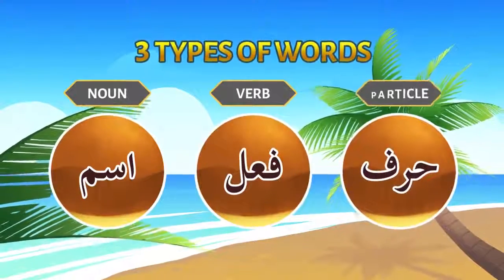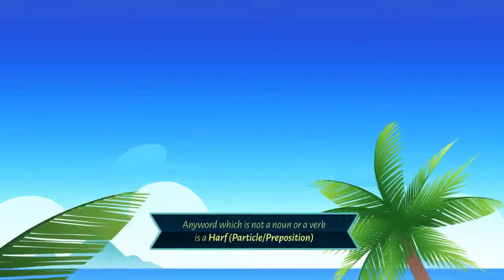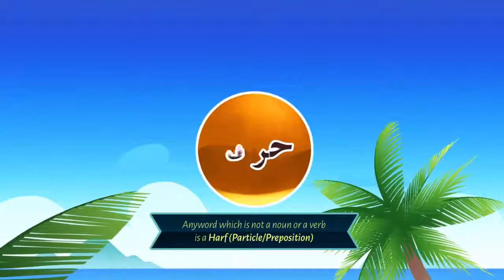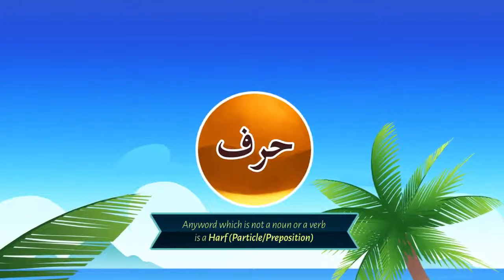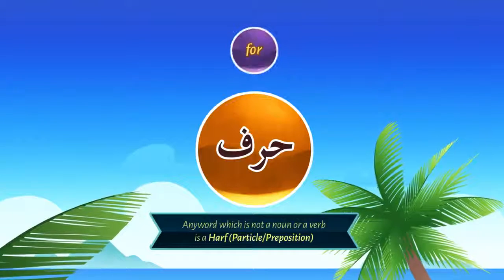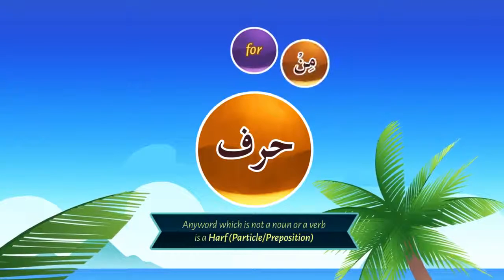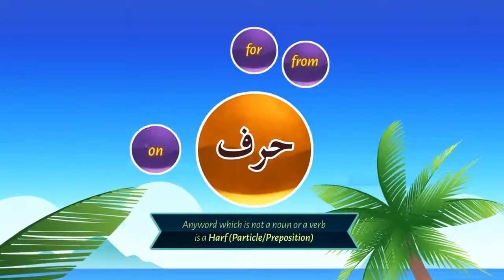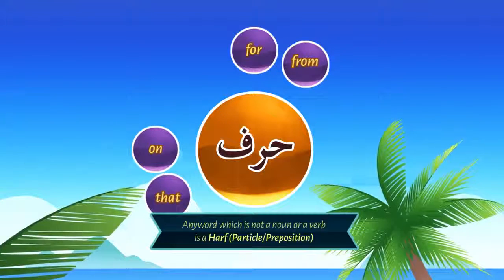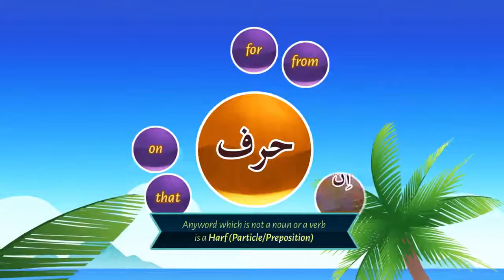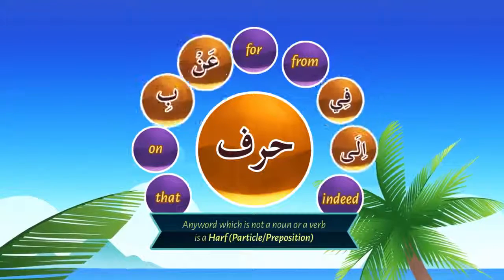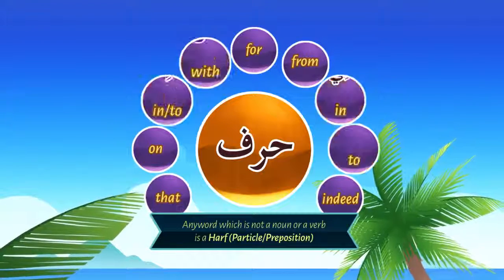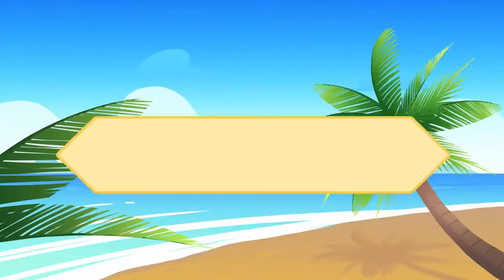Any word which is not a noun or a verb is a harf, or particle. For example: li or la means 'for', min means 'from', ala means 'on', an means 'that', inna means 'indeed', and so on. Let's take the first one.